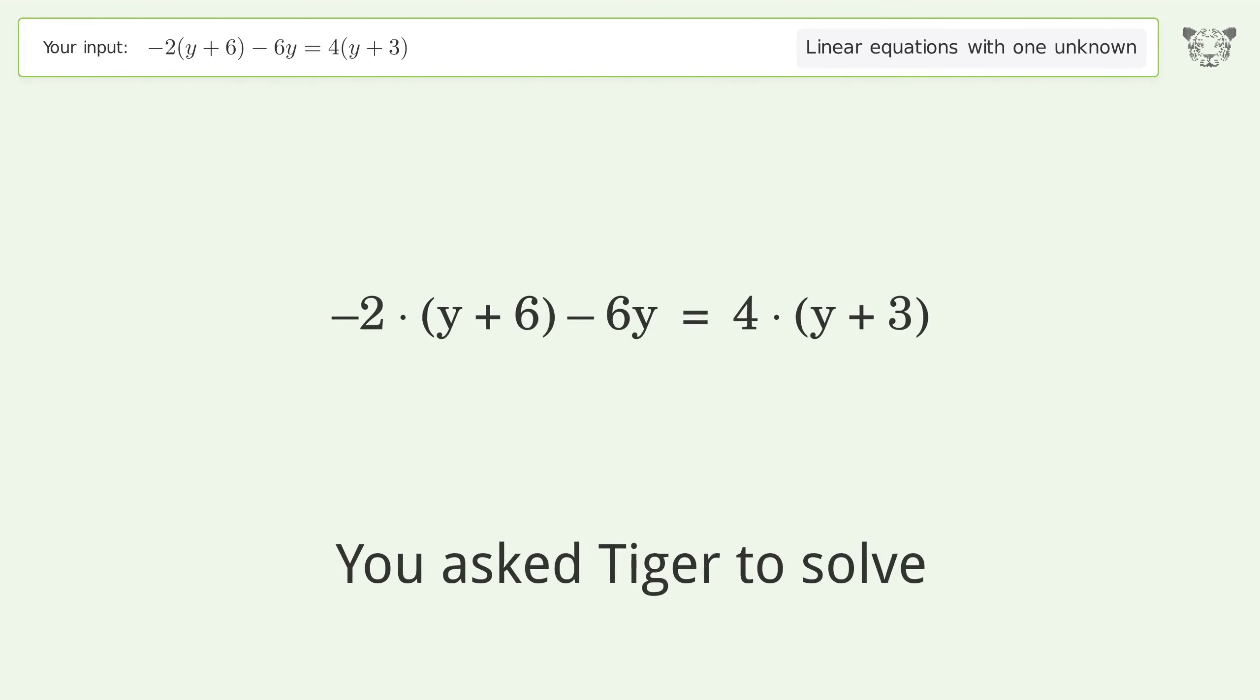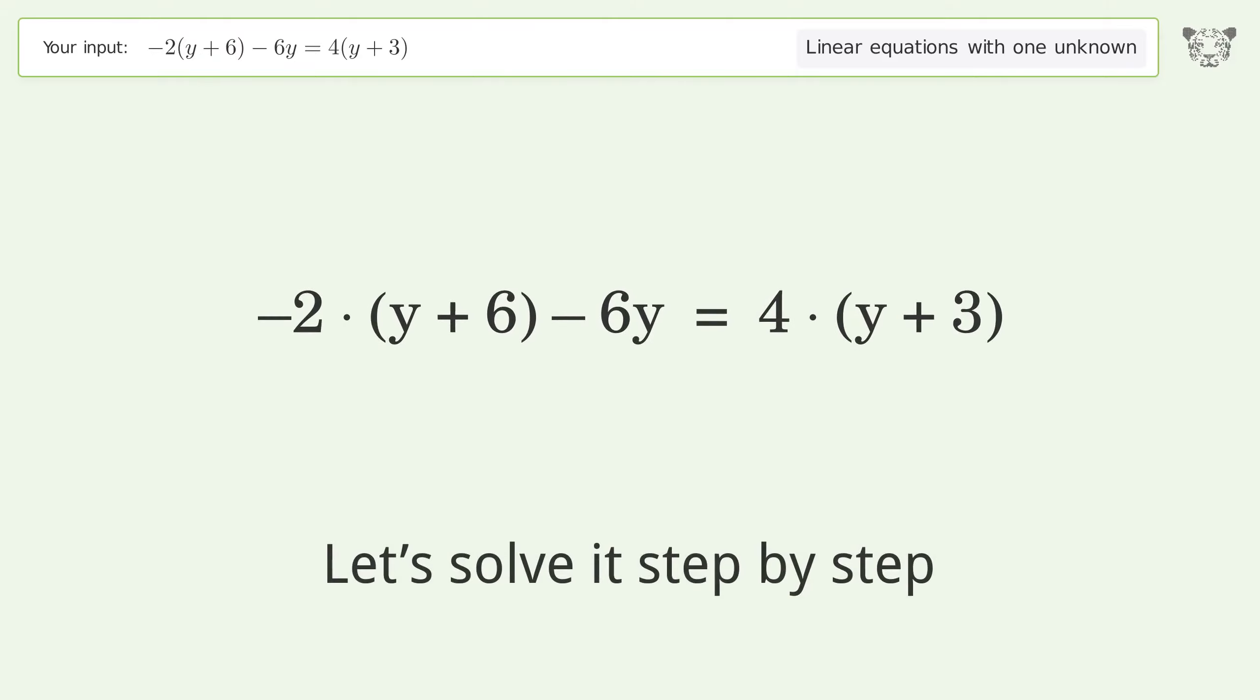You ask Tiger to solve this linear equation with one unknown. The final result is y equals negative 2. Let's solve it step by step. Simplify the expression.